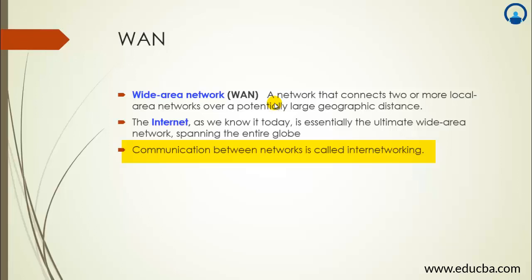There is no single owner of the internet because it spans different regions. In India, the internet is provided by service providers like Tata, Vodafone, or Bharti; in the US by AT&T or Sprint; in Europe by British Telecom or Alcatel. These service providers connect different regions, forming what we call the internet. The limitation of WAN is bandwidth — data transfer over WAN is very costly because the distances involved can be between two continents, requiring payment for point-to-point lines.